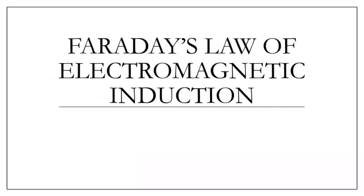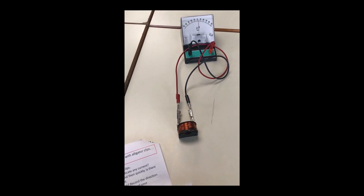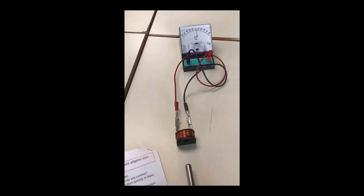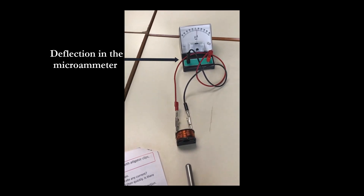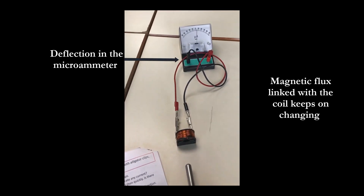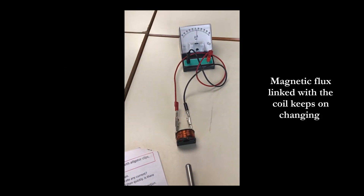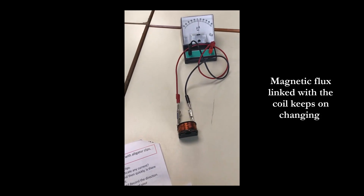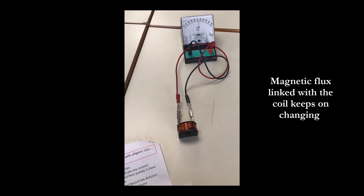To understand Faraday's law of electromagnetic induction, let's look at this video. In this video, when I move the magnet closer to the coils, a current is produced in the circuit. This is also evident from the deflection in the microammeter. The current is produced as the magnetic flux linked with the coil keeps on changing, which then produces an EMF.